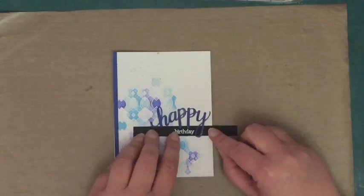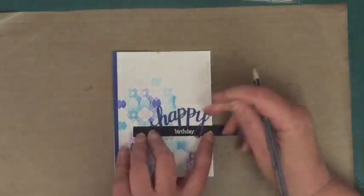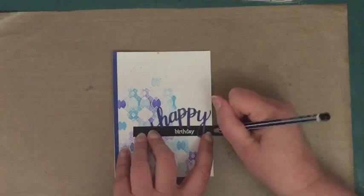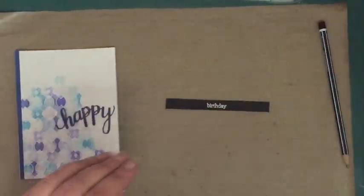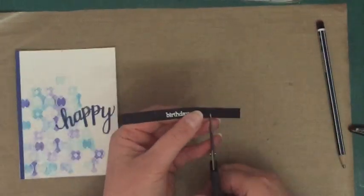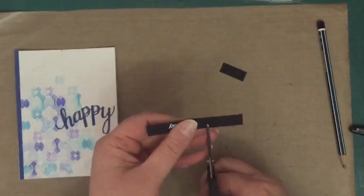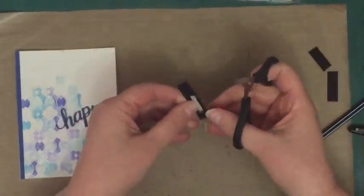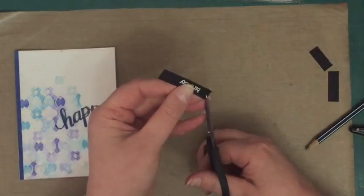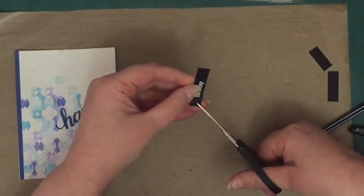All right, so now I'm just deciding where I want to position this sentiment, and I'm going to cut that black strip down so that it has like a little banner, little ribbon edge on one side and just flush up against the right hand side of the card. So I'm just using my little scissors. These scissors are from Stamping Up.